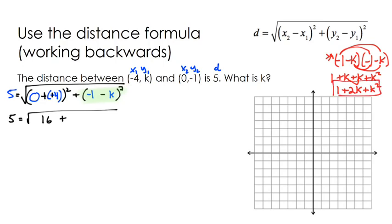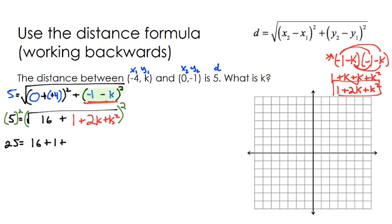Let's insert that value back in: we have 16 plus 1 plus 2k plus k squared. My next step is to square both sides of the equation to get rid of the radical. So 5 squared is 25 on the left side, and on the right side the exponent and the radical are inverse operations so they undo each other, leaving us with 16 plus 1 plus 2k plus k squared.